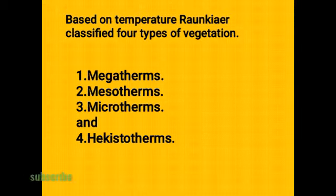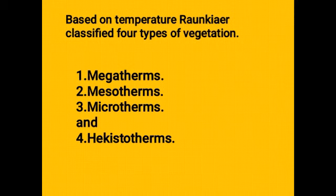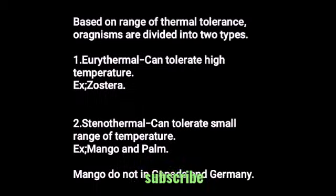Based on temperature, Raunkiaer classified four types of vegetations: megatherms, mesotherms, microtherms, and histotherms. These are the four types of vegetations classified based on temperature.